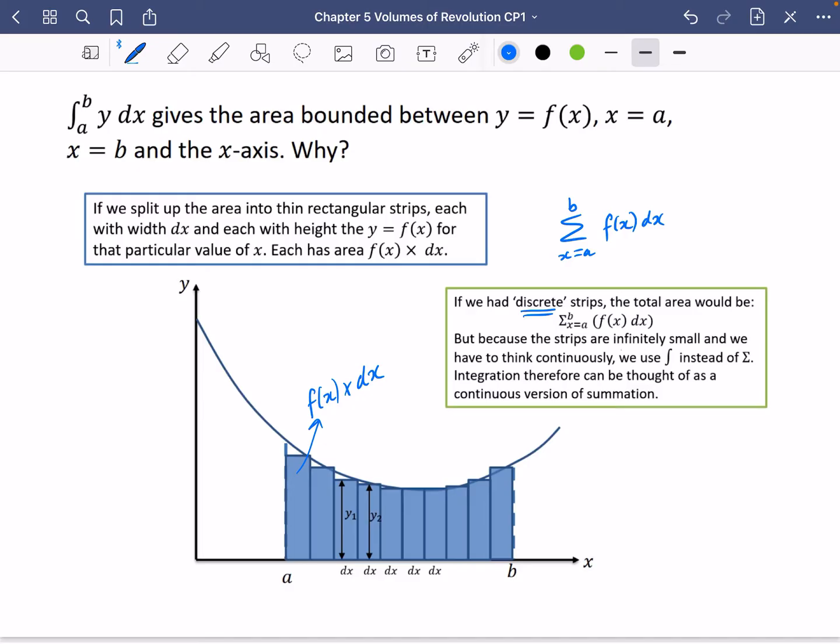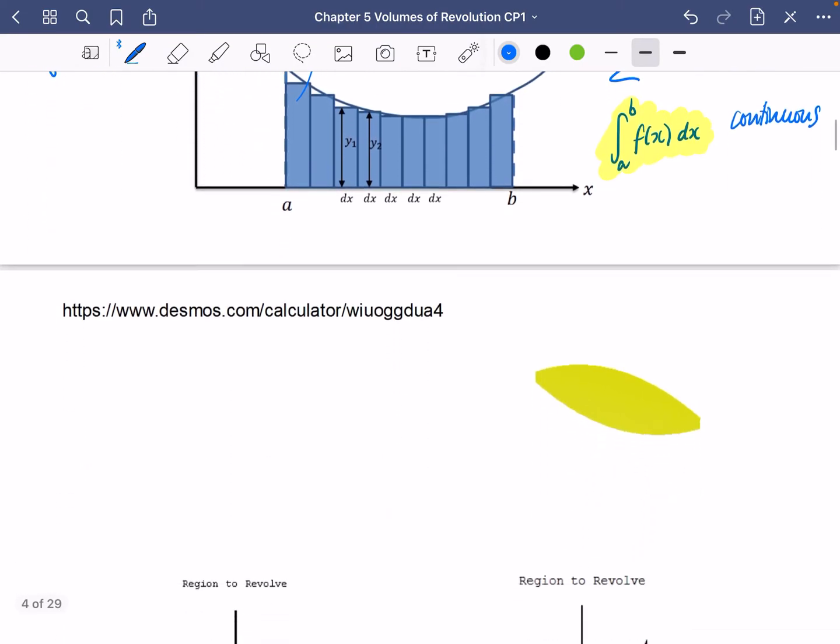But because we make the strips become infinitely small, and we think continuously instead of discrete, we change the sigma sign to the continuous version of the sigma sign. And we still have that f of x dx between a and b. So these two things are the same as each other, apart from this one is a discrete idea, and this one is continuous. And I don't think people really realise that this symbol and this symbol are both sigma. This one is for discrete, and this one is for continuous. So that's actually where area works, and we're going to try and extend this idea now to volumes of revolution.